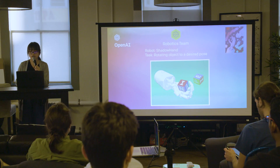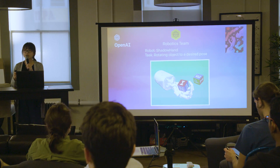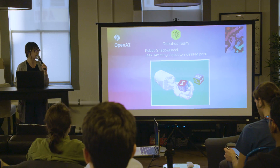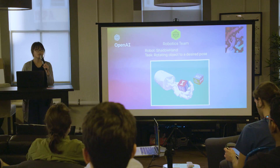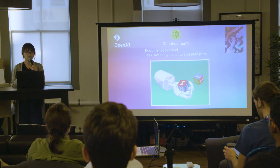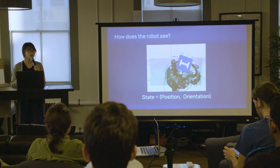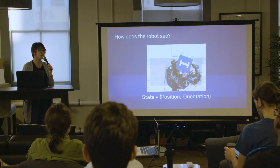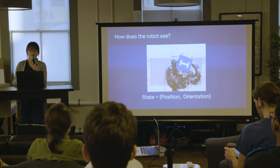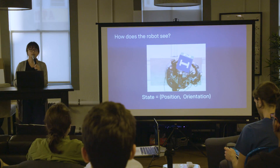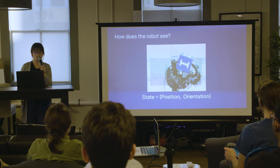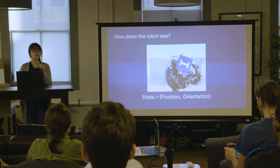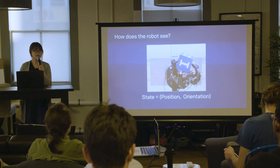Before the robot can start moving its fingers to solve this task, the first question is: how does the robot know where the object is and what pose it's in? In other words, how does the robot know the position and orientation of the object? In robotics and reinforcement learning, we call these the state.